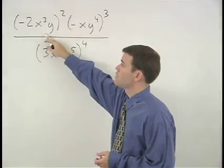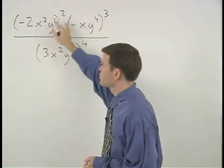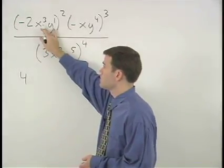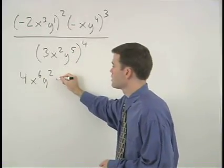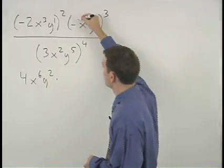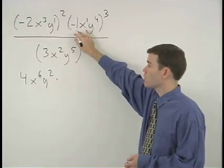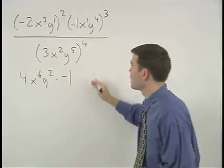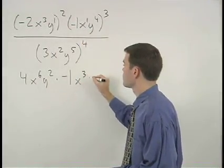To simplify negative 2x to the third y squared, think of y as y to the first and square the coefficient of negative 2 to get positive 4, and multiply each of our exponents by 2 to get x to the sixth y squared. This is all multiplied by negative xy to the fourth cubed. Think of the negative as negative 1 and x as x to the first. So we cube our coefficient of negative 1, which is negative 1 times negative 1 times negative 1, or negative 1, and multiply each of our exponents by 3 to get x to the third, y to the 12th.